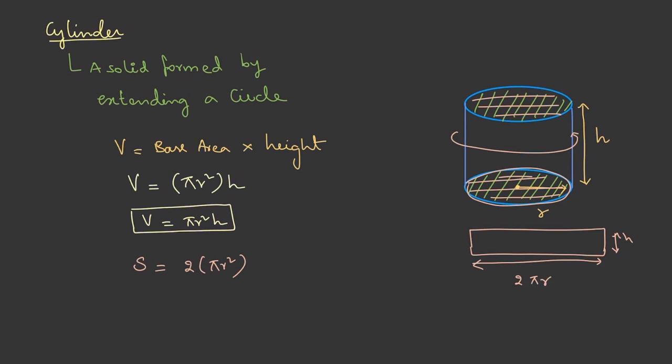When we know this length and the height, this is basically a rectangle. Therefore, I can calculate the area as the length into breadth that is 2 pi r into h.